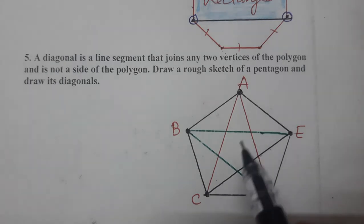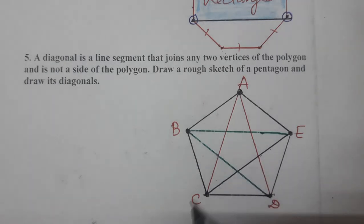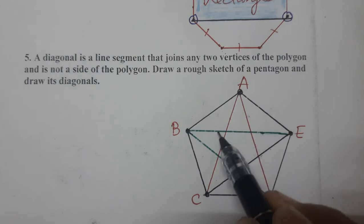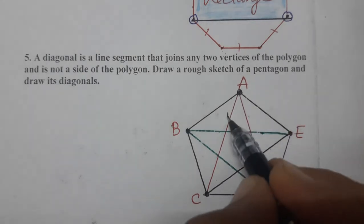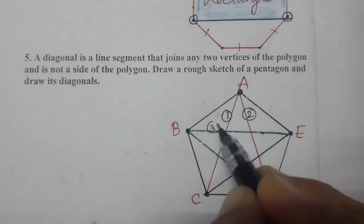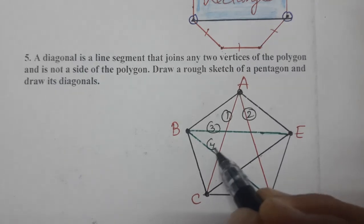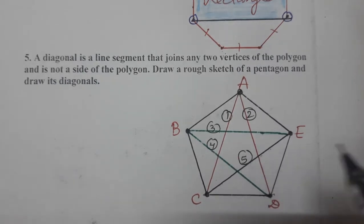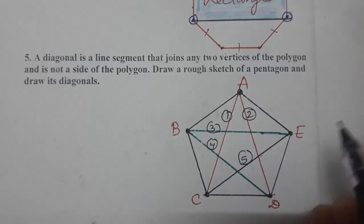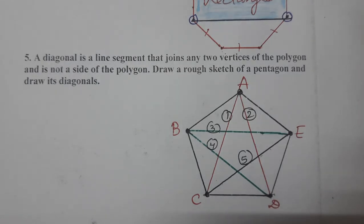So we have got how many diagonals? Let's count: 1, 2, 3, 4 and 5. This is the first, second, third, fourth, and last — the fifth diagonal. So there are five diagonals in a pentagon. This completes this question as well.